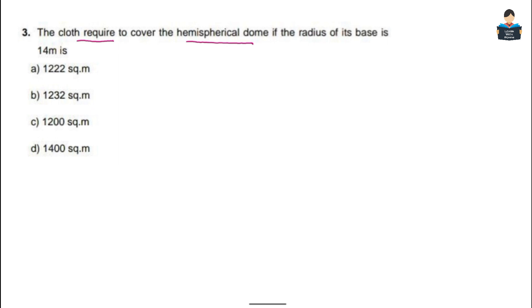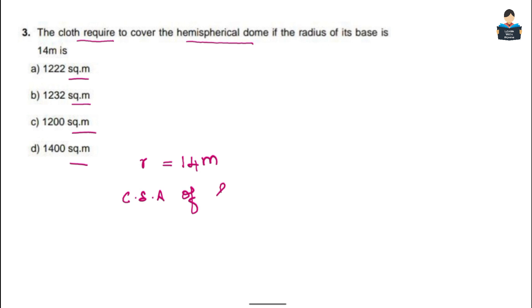The third question: find the cloth required to cover the hemispherical dome if the radius of its base is 14 meters. We need to find the curved surface area (CSA) of the hemisphere. The formula for CSA of a hemisphere is 2πr².